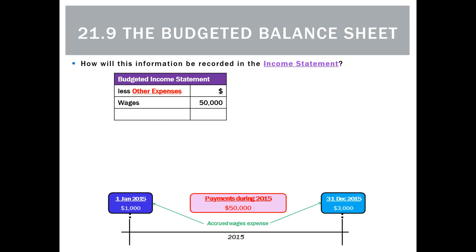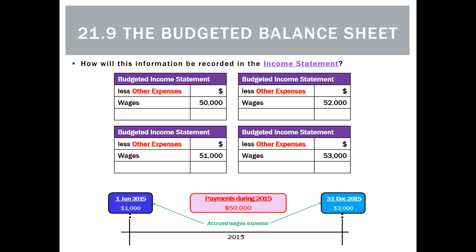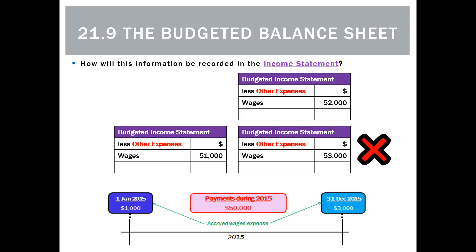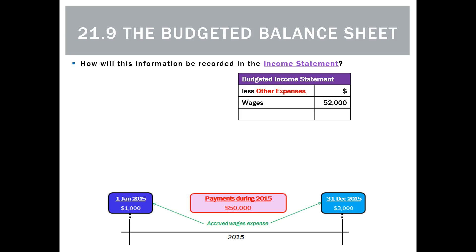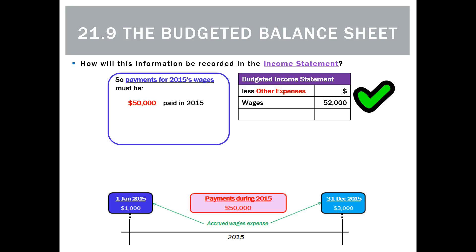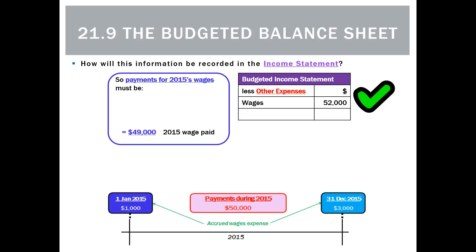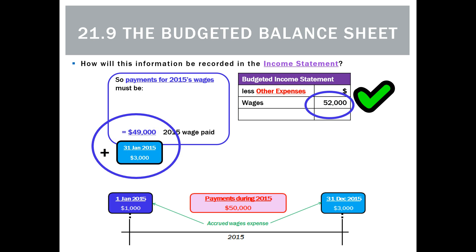For the income statement, the options are wages of $50,000, $51,000, $52,000, or $53,000. We eliminate $50,000 — that's what was paid, not incurred. We eliminate $53,000 because that would double-count accrued expenses. We eliminate $51,000 because it doesn't account for the fact that some payments this period relate to last period. The correct answer is $52,000. Of the $50,000 paid, $1,000 was for last period's wages, leaving $49,000 for this period. We then add the $3,000 of accrued wages at period end, giving a total wages expense of $52,000.